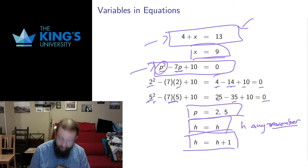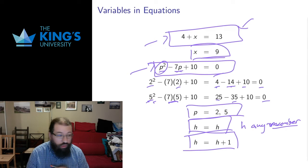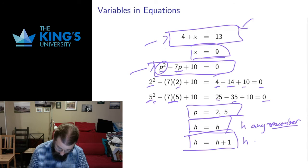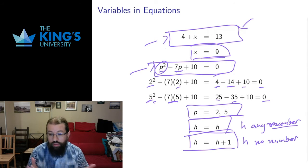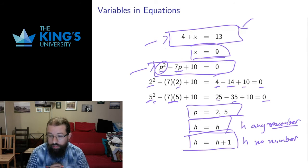You can have a very silly equation as well. h equals h plus 1. There are no numbers which are the same as themselves plus 1. So this thing has no solutions whatsoever. All of these things can happen - infinitely many solutions, no solutions, even with relatively simple equations.